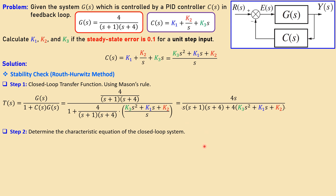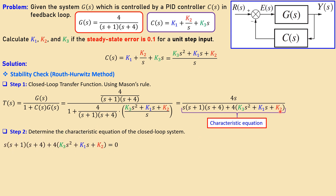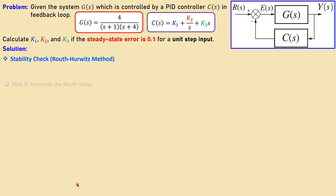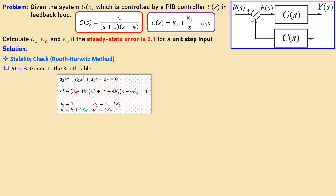The second step is to determine the characteristic equation from this closed-loop transfer function. That is given by the denominator set equal to zero. For the Routh-Hurwitz method we need a polynomial, so we expand the parentheses and collect all like terms — s³, s², s, and the constant terms together. After doing that we get a third-order polynomial. Moving on with the stability criterion, we generate the Routh table starting with this polynomial.